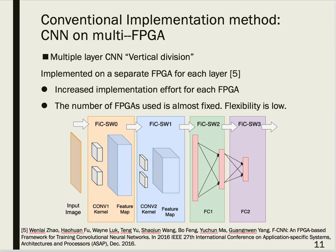I will explain the conventional implementation method of CNN on multi-FPGAs. In the conventional method, each CNN layer is implemented in a separate FPGA — it's like a vertical division. This requires a design for each FPGA, requiring much design effort. The number of FPGAs used is fixed according to the number of layers, resulting in low flexibility and scalability.